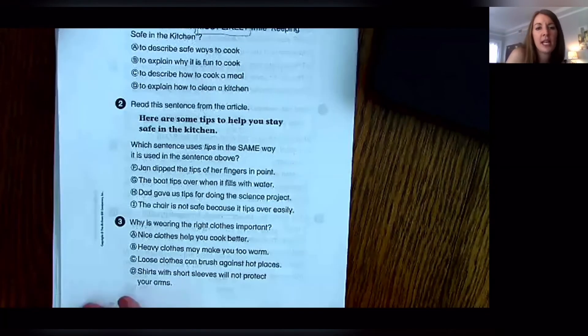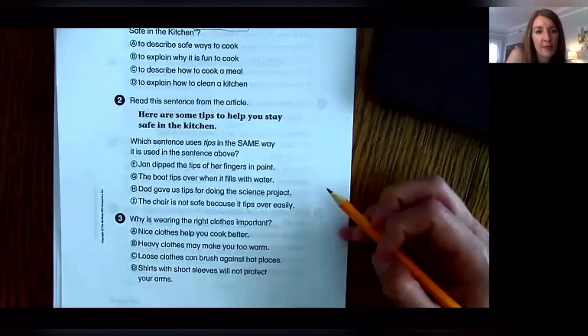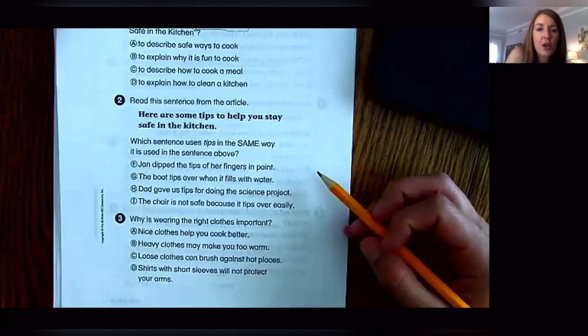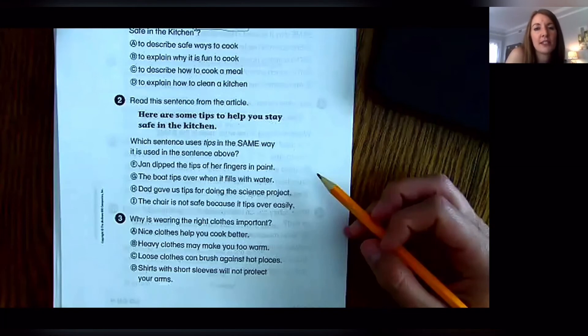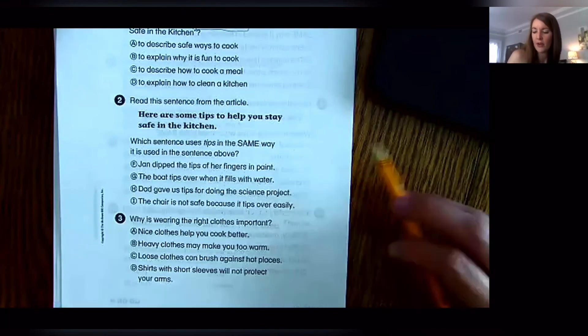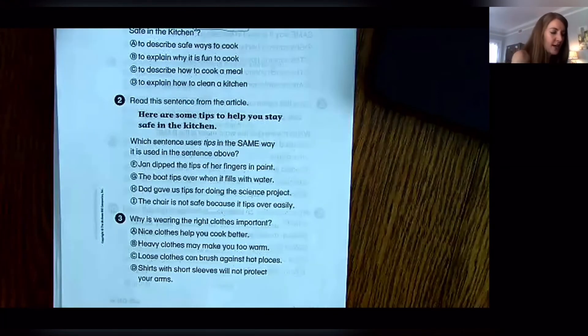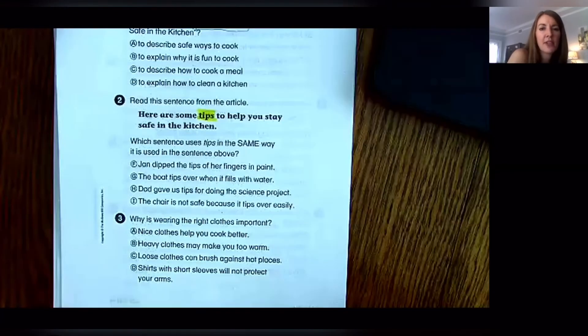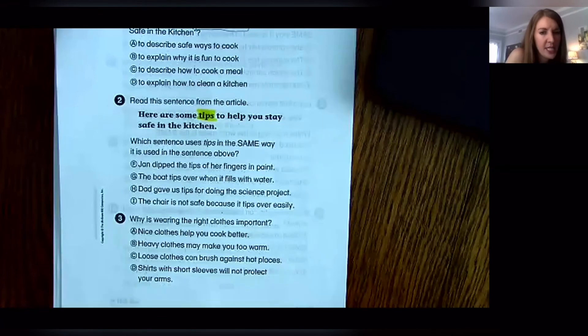Text evidence. Number two: This is a multiple meaning strategy. Read this sentence from the article: Here are some tips to help you stay safe in the kitchen. Which sentence uses tips in the same way it's used in the sentence above? Okay, so I am going to first figure out, I'm going to highlight tips in this sentence and I'm going to figure out what does that mean? Here are some tips to help you stay safe in the kitchen.